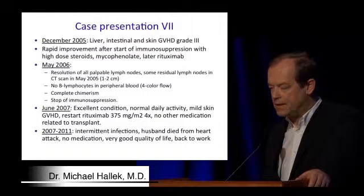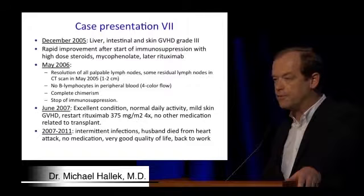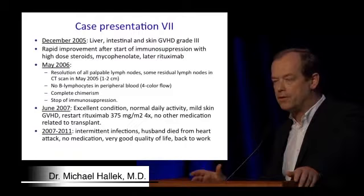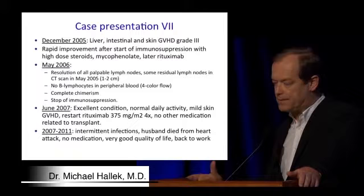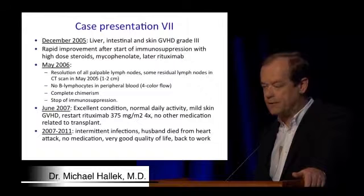A year later she was progressing, had stronger lymphadenopathy, and needed treatment according to the treating hematologist. So she received six courses of fludarabine plus rituximab — a treatment we probably would no longer do today, which is why I'm showing this case. Quite quickly, after only a very short time of a few months, she relapsed with progressing lymphadenopathy and had refractory disease.